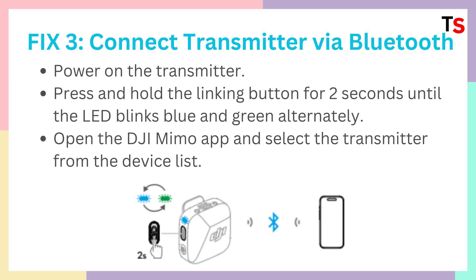Fix 3 is connect transmitter via Bluetooth. You just need to follow these 3 steps. Step 1: power on the transmitter and make sure it is on. After that, press and hold the linking button for 2 seconds until the LED blinks blue and green alternately, as you can see in the picture. Then open the DJI MIMO app and select the transmitter from the device list.